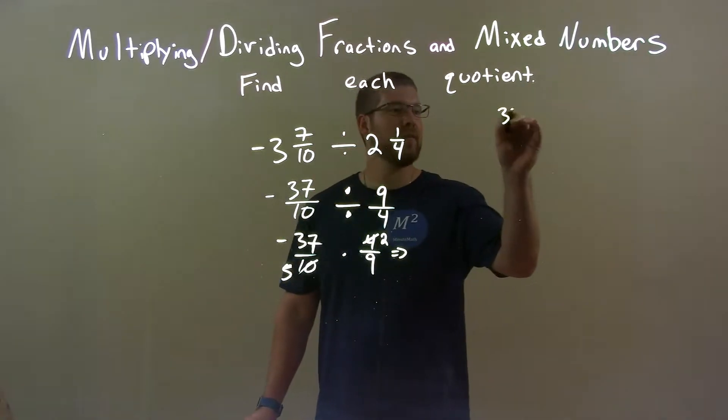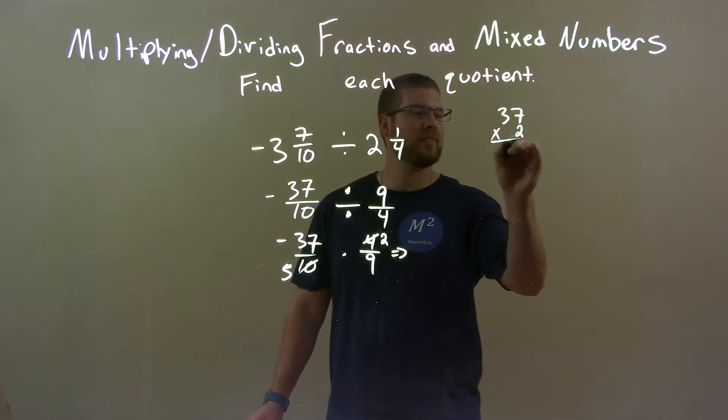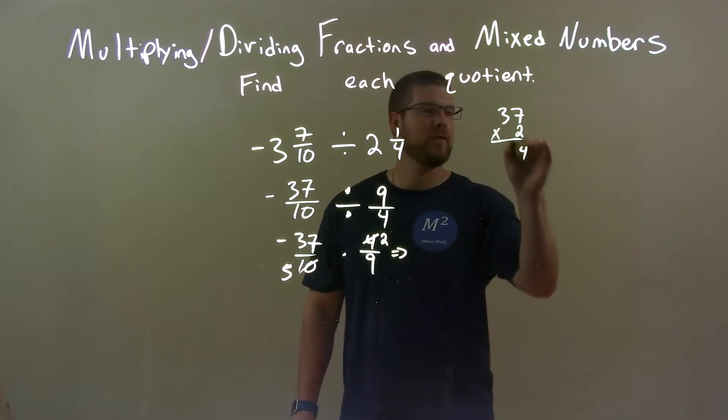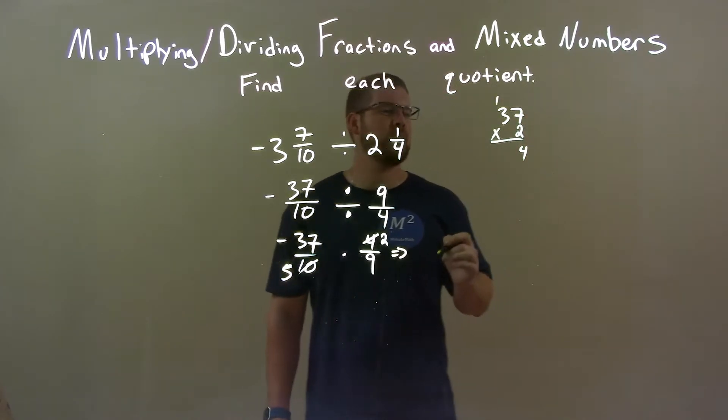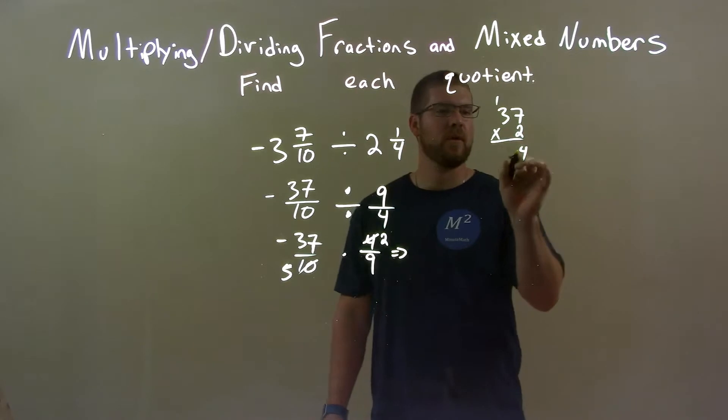Off the top of my head, I'm not going to try to do that. So 37 times 2, because chances are I'll mess it up. 2 times 7 is 14, 4 carry the 1.